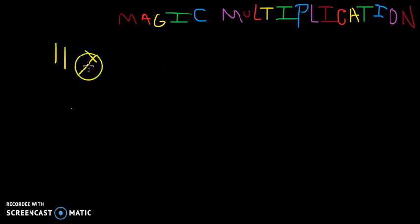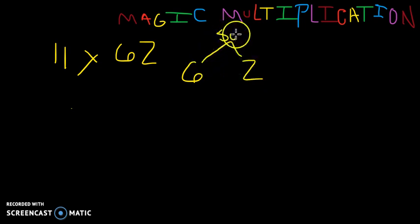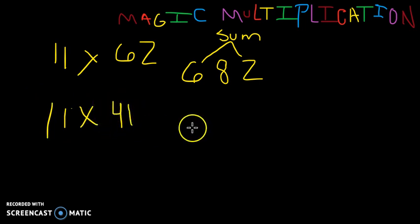So let's try 11 times 62. What we're going to do is take the 6 and the 2 and add them. So 6 plus 2 is 8. We're going to separate the 6 and 2, and we're taking this sum which turns out to be 8, so 682 is the answer. Yes, it really is that easy. Do one more: 11 times 41. Separate the 4 and the 1, take the sum which is 5, put it in the middle of the two digits. 451.